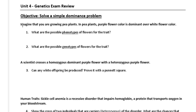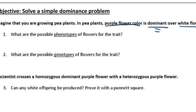So if you're having any trouble, we're reading the bold parts here. It says imagine that you are growing pea plants. In pea plants, purple flower color is dominant over white flower color. The first question asks us: what are the possible phenotypes? In order to answer this, you'll have to remember that phenotypes means physical trait. Remember 'pheno' — physical trait. So your answer here should be the two physical traits we have: purple and white flowers.